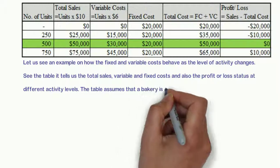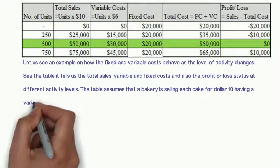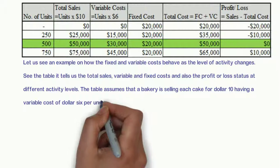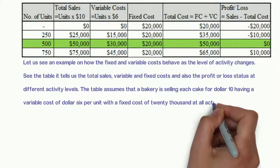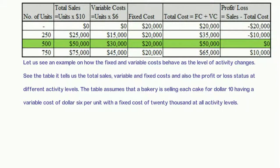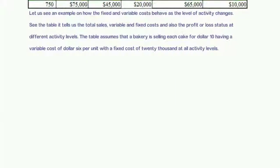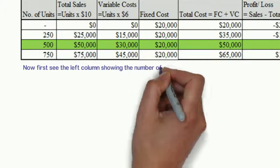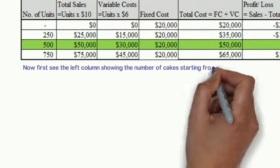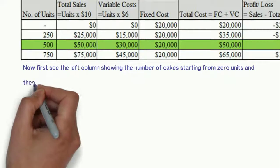The table assumes that a bakery is selling each cake for $10 having a variable cost of $6 per unit with a fixed cost of $20,000 at all activity levels. Now first see the left column showing the number of cakes starting from 0 units and then increasing all the way down.